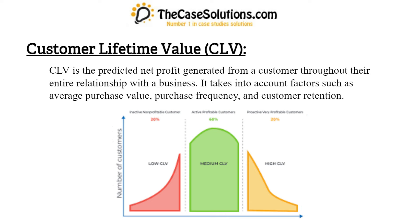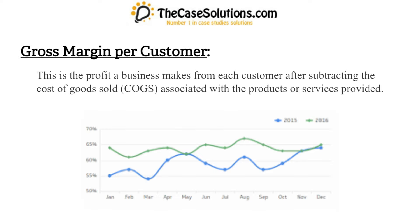Customer lifetime value, CLV: CLV is the predicted net profit generated from a customer throughout their entire relationship with a business. It takes into account factors such as average purchase value, purchase frequency, and customer retention. Gross margin per customer: this is the profit a business makes from each customer after subtracting the cost of goods sold, COGS, associated with the products or services provided.